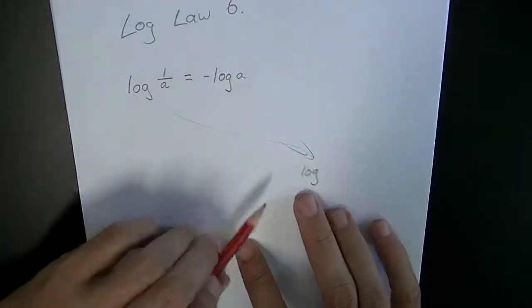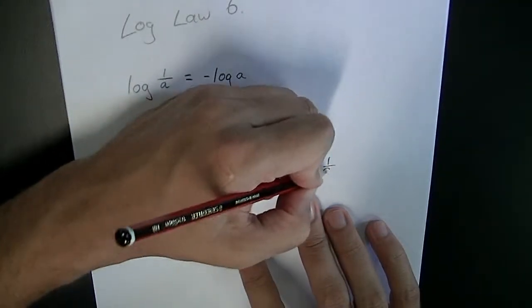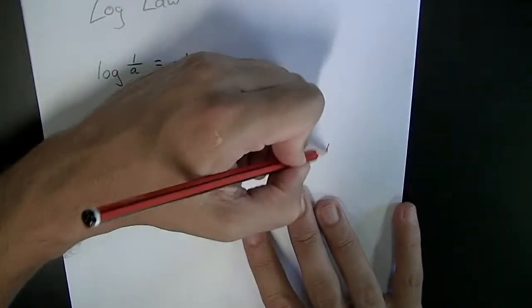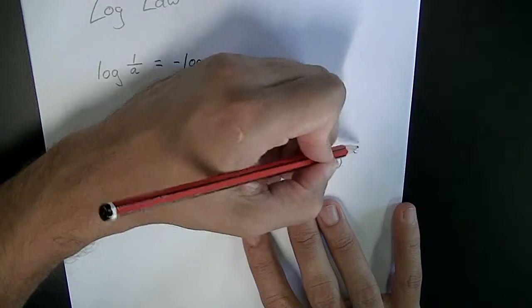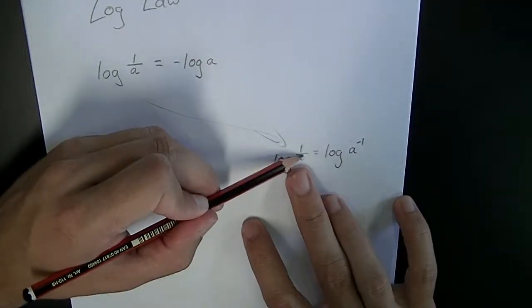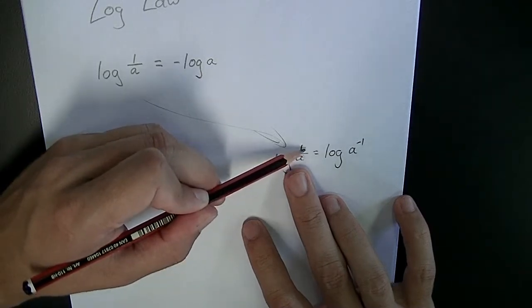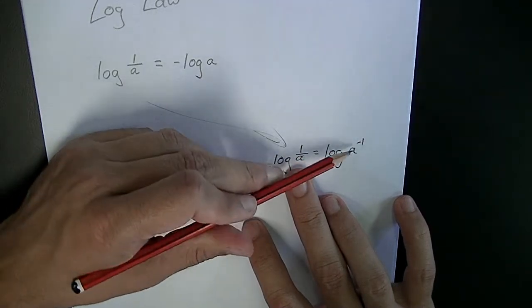Log 1 on a. Now, you can rewrite that as log a to the negative 1. Okay, some of us have had some trouble with that, but remember, if a is on the bottom, we can move it to the top by giving it a negative power. In this case, negative 1.